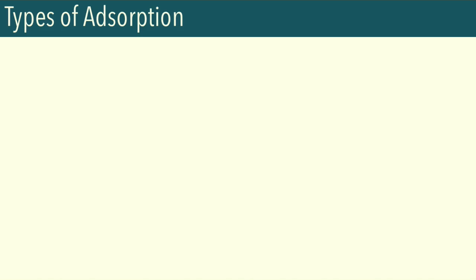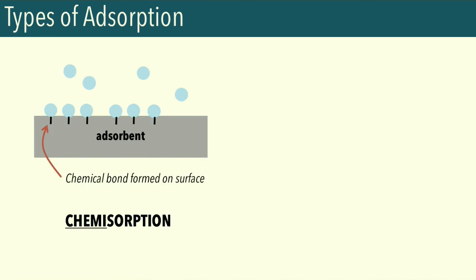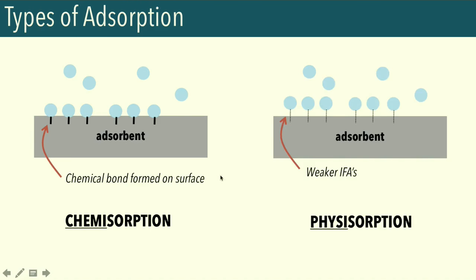There are two major types of adsorption. Chemisorption is when adsorbates form chemical bonds with the adsorbent. Physisorption is when only weak intermolecular forces of attraction hold the adsorbates onto the adsorbent surface. Chemisorption is characterized by very high enthalpies of adsorption because chemical bonds are being formed, whereas physisorption involves relatively smaller enthalpies of adsorption due to the weaker intermolecular forces involved.